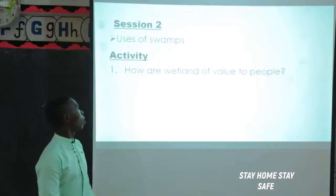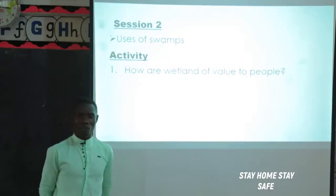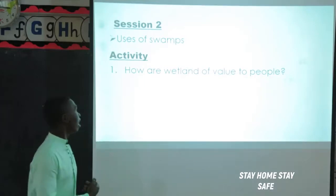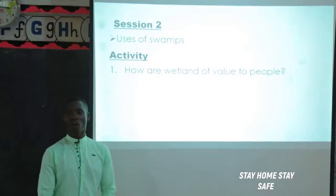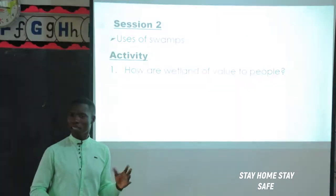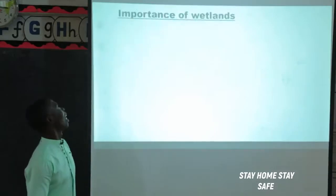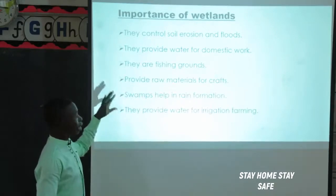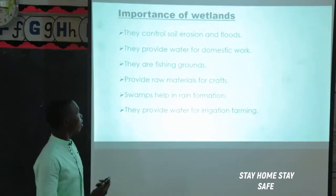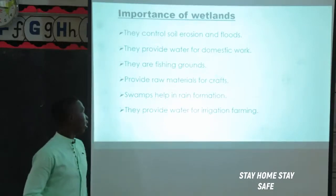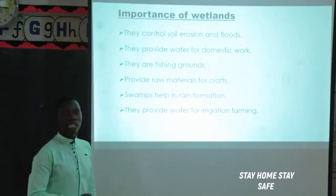In session two, we have uses of swamps. How do people benefit from wetlands or swamps? Swamps help to control soil erosion. They provide water for domestic use. They are fishing grounds. They provide raw materials for crafts. Swamps help in rain formation, and they provide water for irrigation farming.